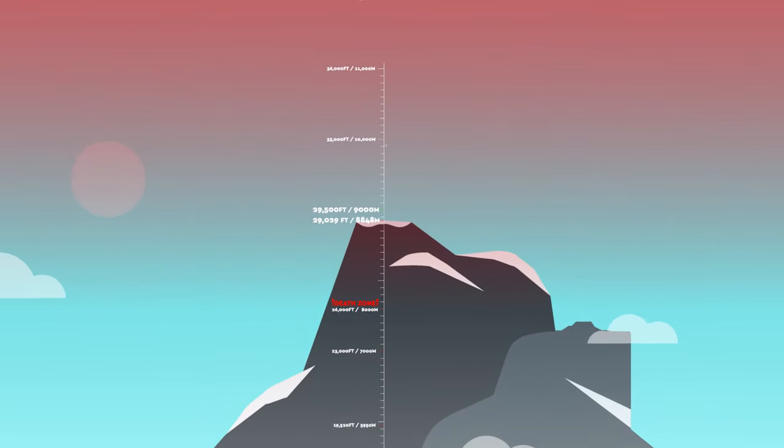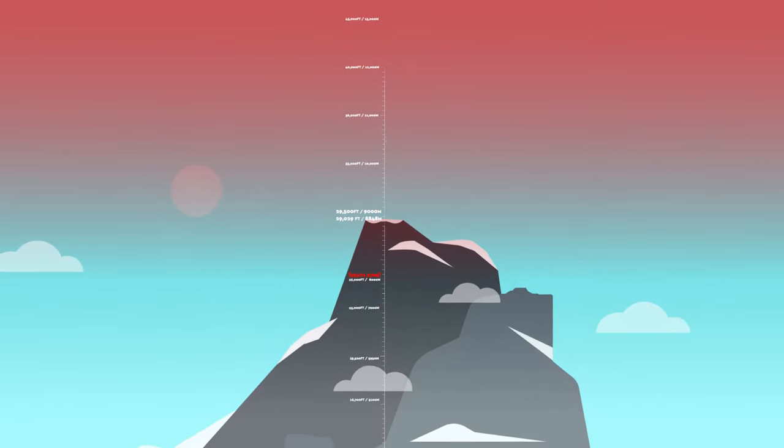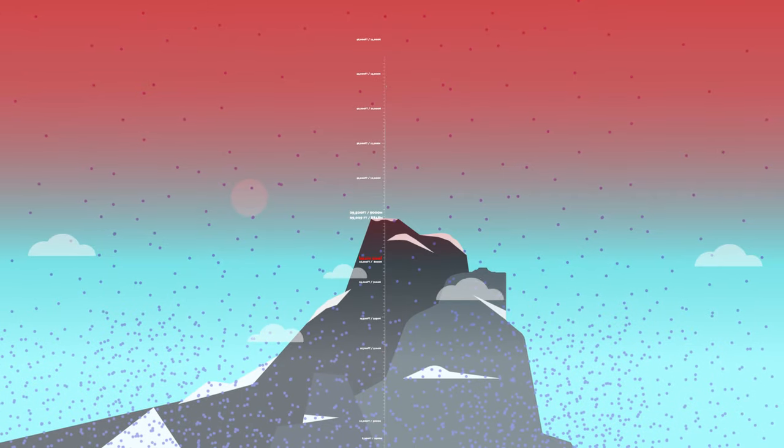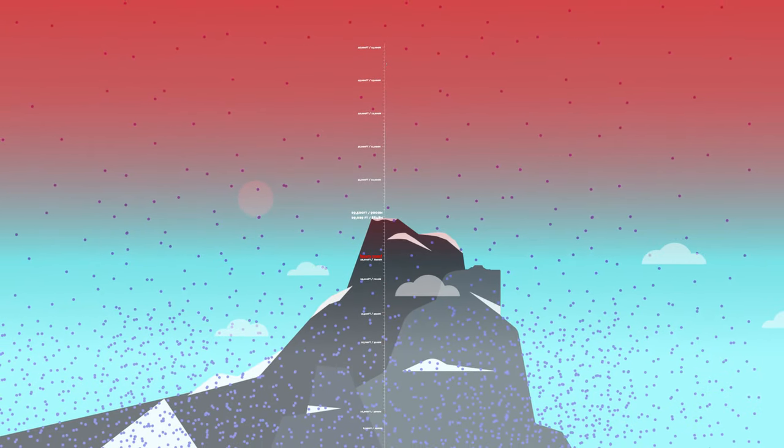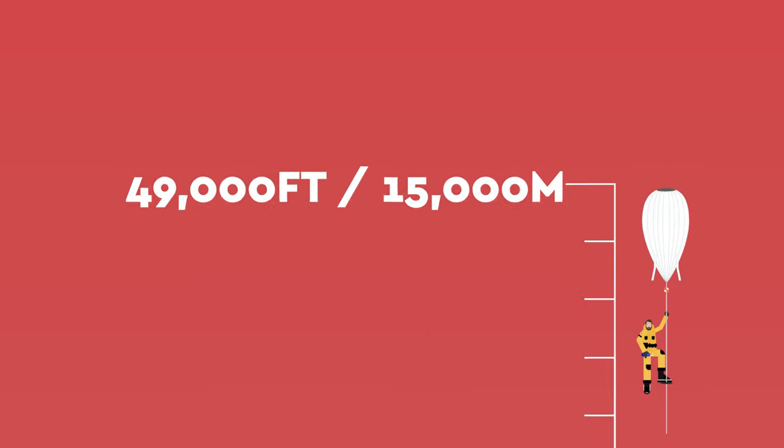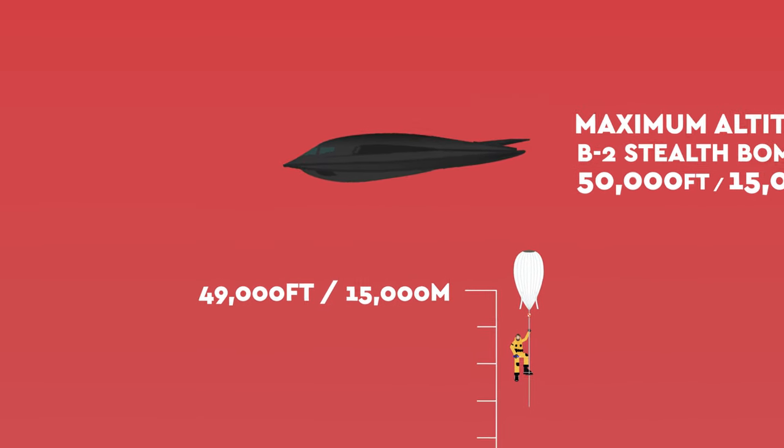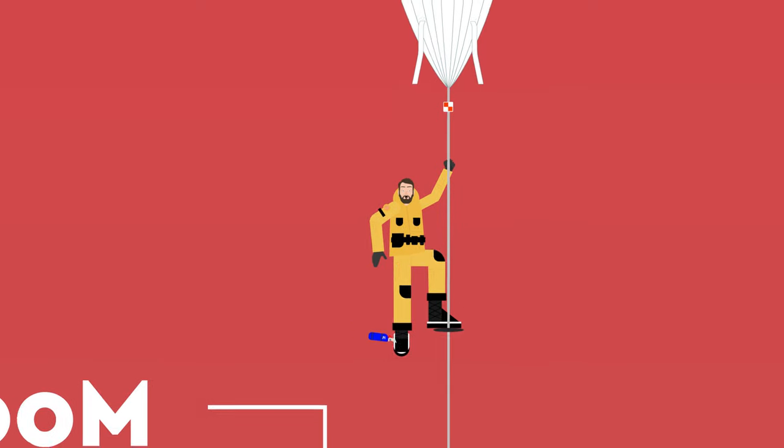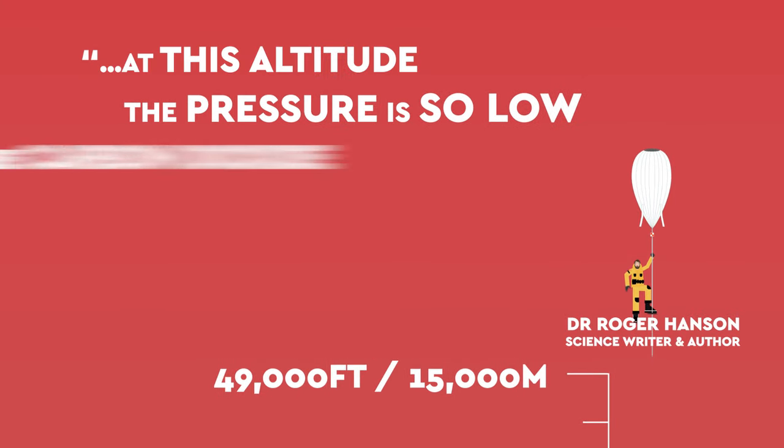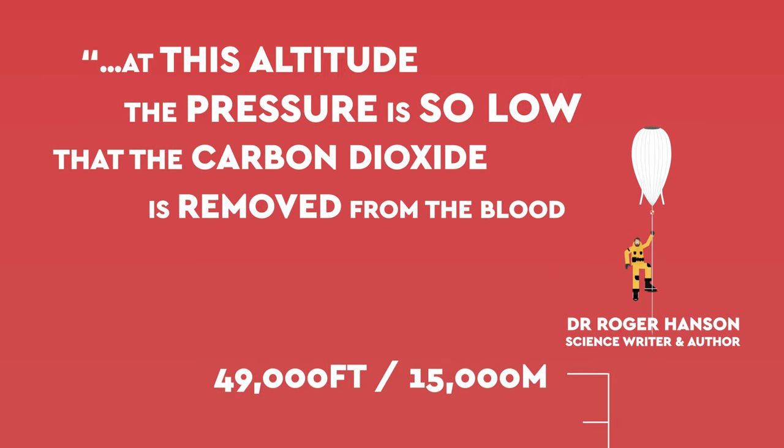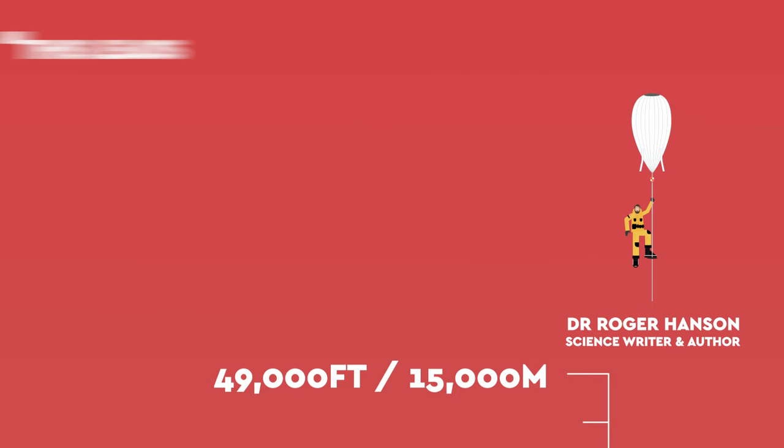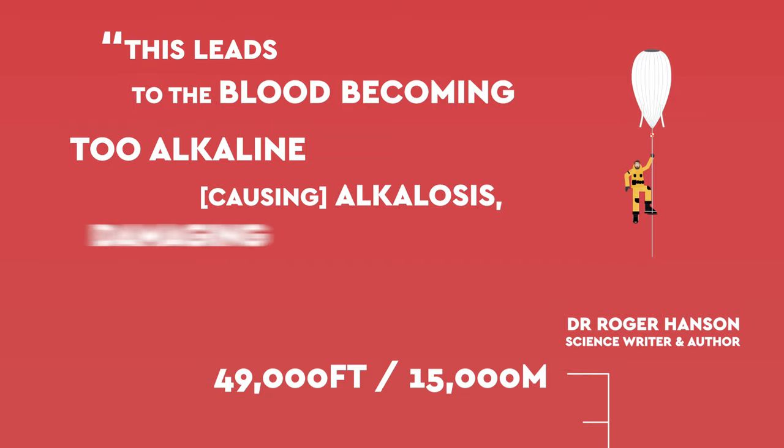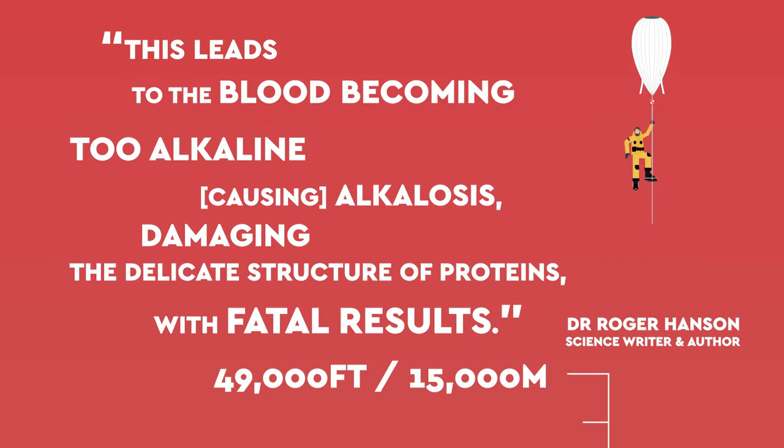What's the absolute height we could survive to? Well with oxygen continuing to decrease, you'd need to get up there pretty quickly. As we established earlier, the reduced amount of oxygen within each breath is due to the decrease in pressure, something that also continues to decrease the higher up we go. Above 49,000 feet or 15,000 meters, the pressure is so low that even supplemental oxygen won't help you. At this altitude, the pressure is so low that the carbon dioxide is removed from the blood faster than it is produced by the body. This leads to the blood becoming too alkaline, causing alkalosis, damaging the delicate structure of proteins with fatal results.